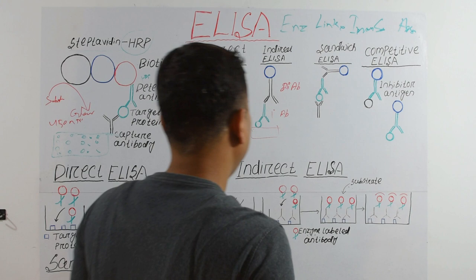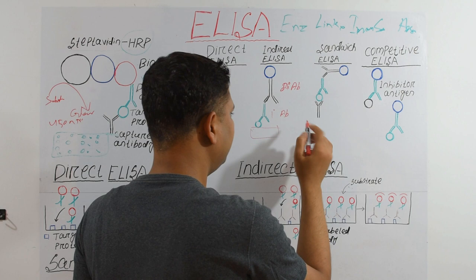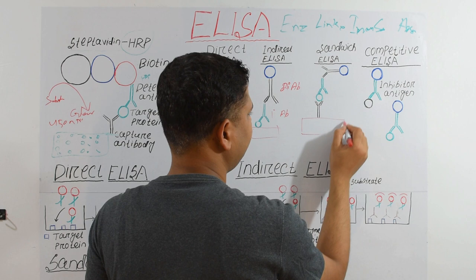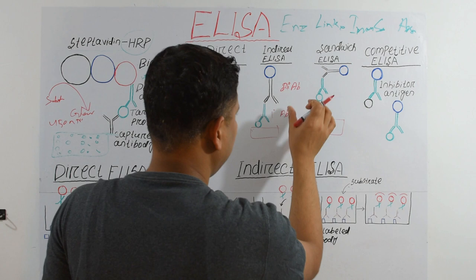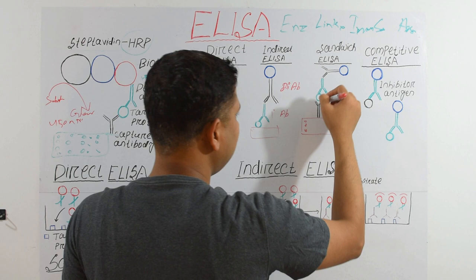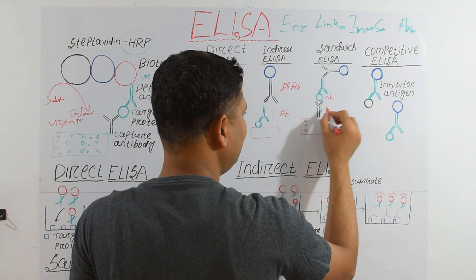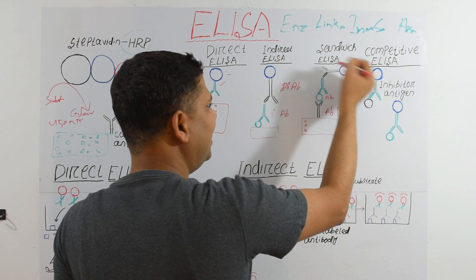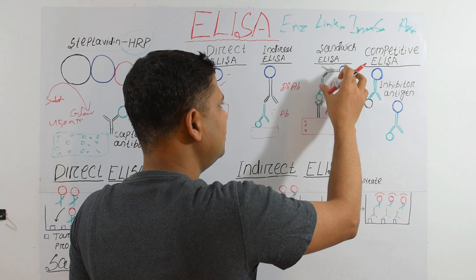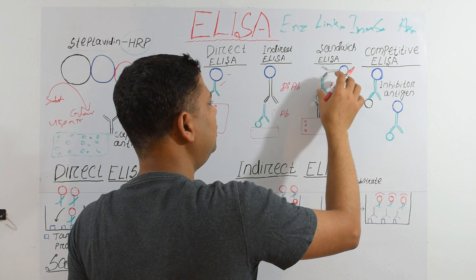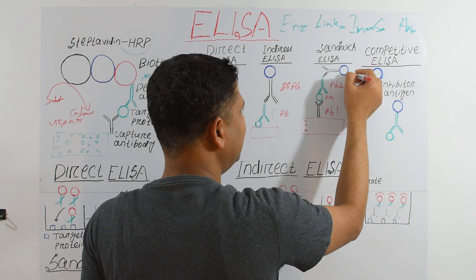In Sandwich ELISA, we first fix antibody one to the surface of each well. To this we add our antigen, then add antibody two. We can directly tag HRP to antibody two, or use an indirect approach with a secondary antibody tagged to HRP.